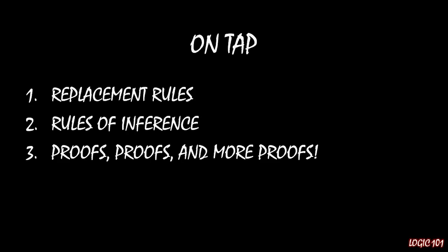Instead, we're going to learn how to do proofs — a three-step process that will cover most of the remainder of the course. First, we'll look at replacement rules: ways of rewriting logical expressions while maintaining logical validity and truthfulness. Second, we'll look at rules of inference, which allow us to take two sentences and conclude a third thing that's logically valid. Then we'll move into more complicated proofs. I hope you like proofs — we'll have a whole lot coming up. Hope you enjoyed this unit and I'll see you next time.